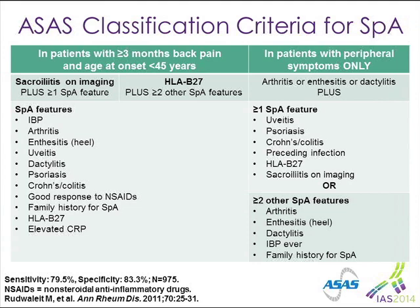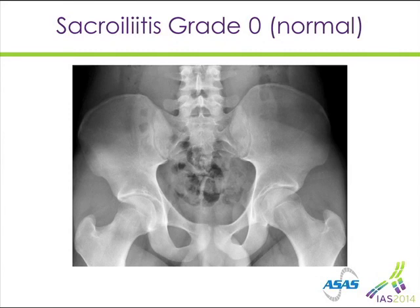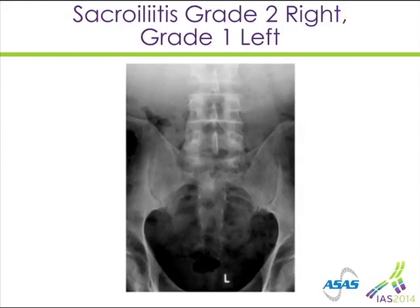Everybody could recognize an abnormal AP film on the pelvis when it looks like this — you see sclerosis, widening of the joint, and what looks like fusion over here. This is a no-brainer. This is a normal sacroiliac joint, also pretty easy to detect. This is a grade one out of four abnormal sacroiliac film, and this is not adequate for modified New York criteria.